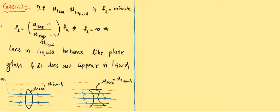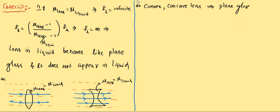In case 3, both convex and concave lenses behave like a plain glass plate with no refraction. Let us now look at diagrams for all these cases together for easy understanding.